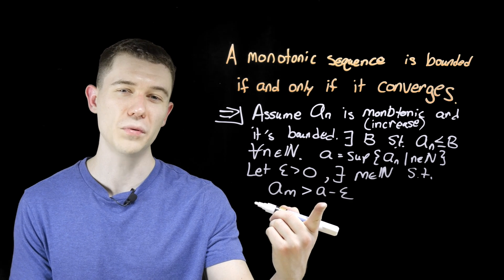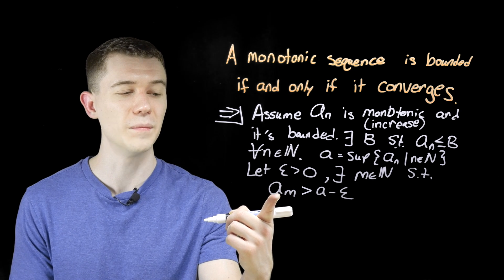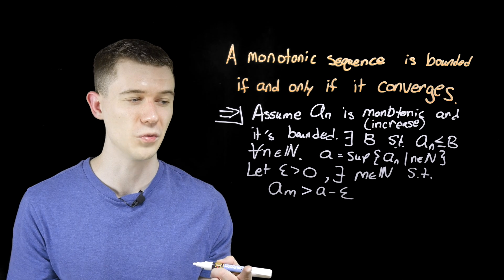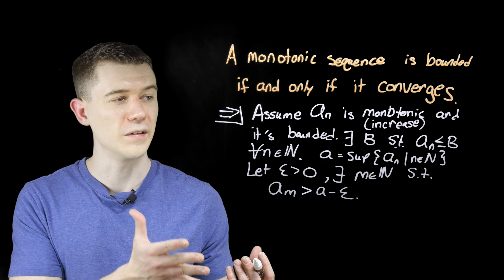If a is the supremum, epsilon is arbitrary, there should be some element here, some element of the sequence that I can sneak in between them. That's sort of like one of the definitions of the supremum. That's what we get from being bounded.